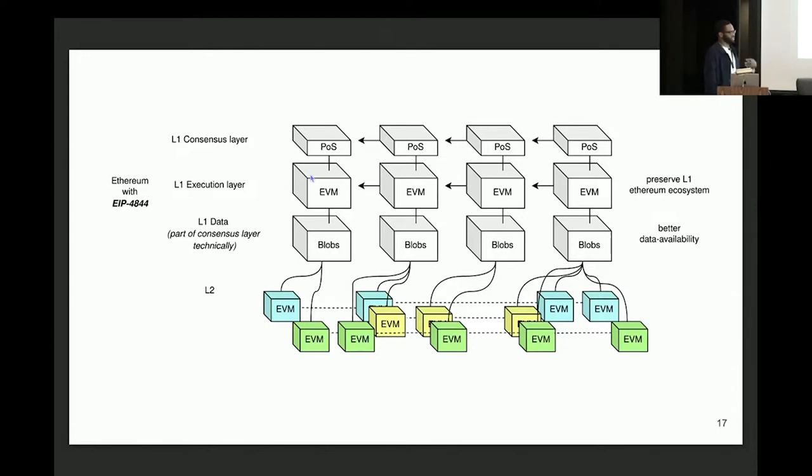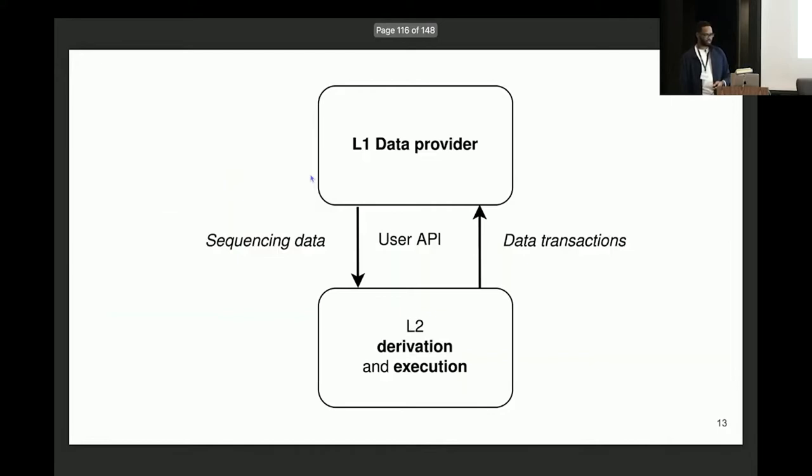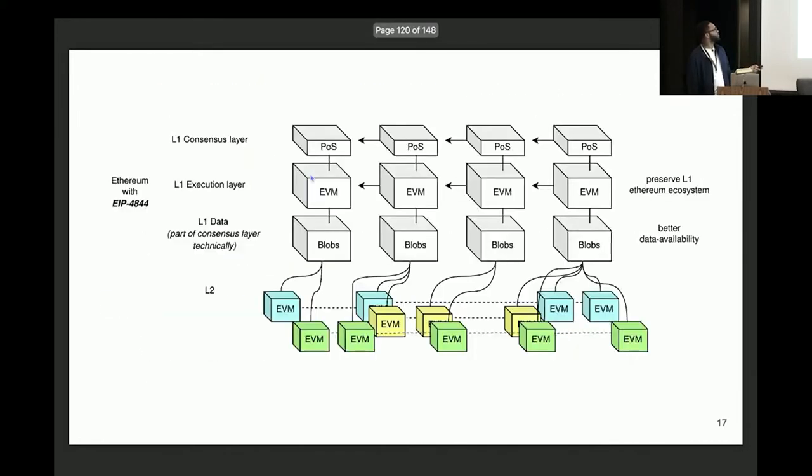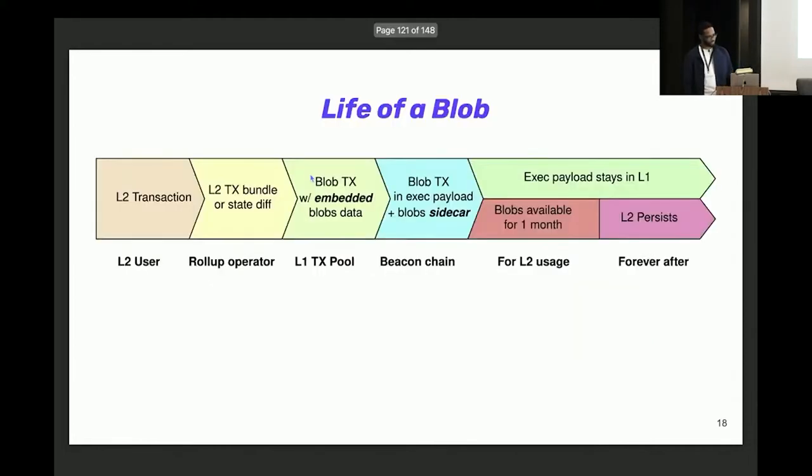So how would L2 use this? All L2 needs to do is basically attach to the data layer whenever we're posting back L2 outputs. Because remember, if we go back a couple slides here, when a sequencer derives the chain from L1 and then applies more transactions in L2, that data that's posted back to L1 doesn't have to be L1 call data. It can be any L1 call data provider. So what we're doing here is replacing the call data that was in the EVM with a new layer. And the idea is that this would make things so much cheaper for L2s.